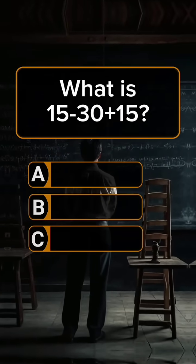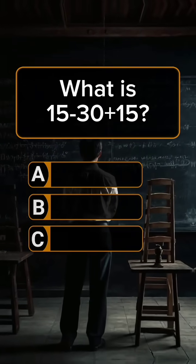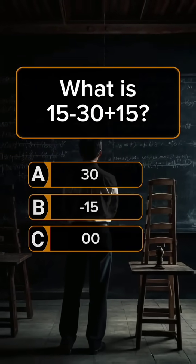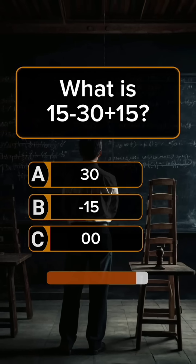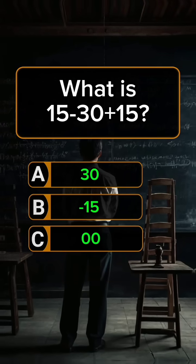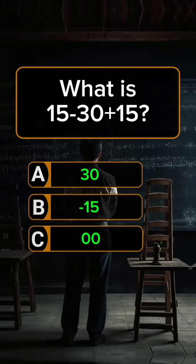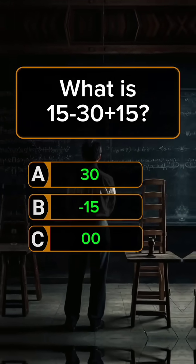Question 7. What is 15 minus 30 plus 15? Answer A: 48. Give me the answer of this question in the comment section.